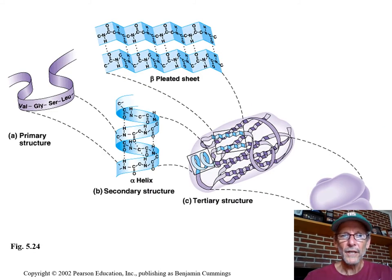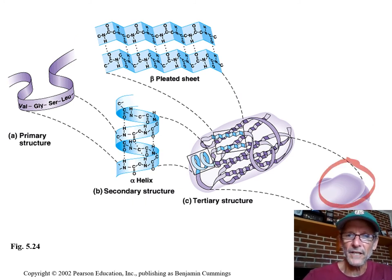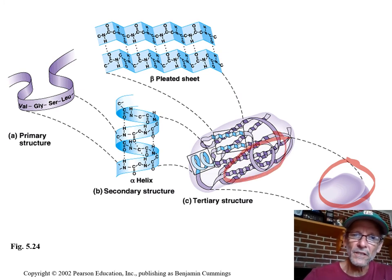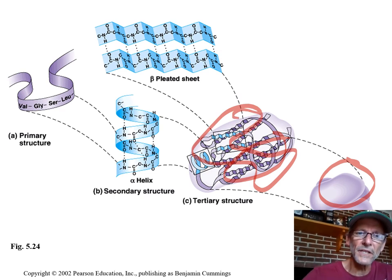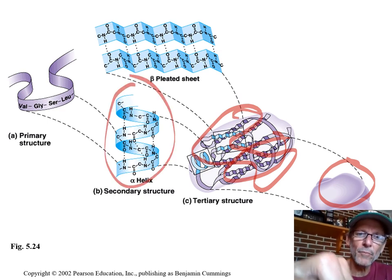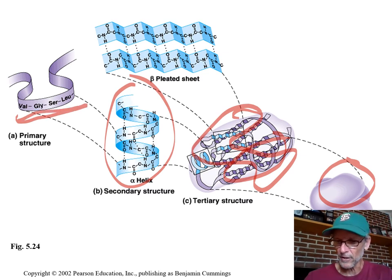A particular protein will have some irregular folding, will possibly have some secondary folding — all of that is due to which amino acids are where.